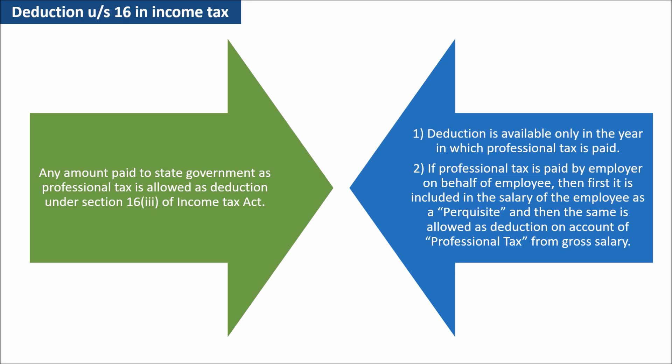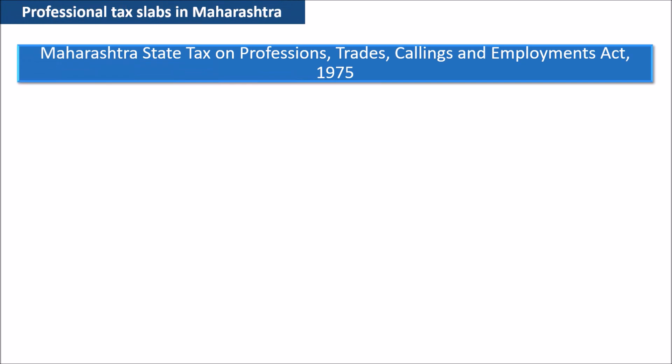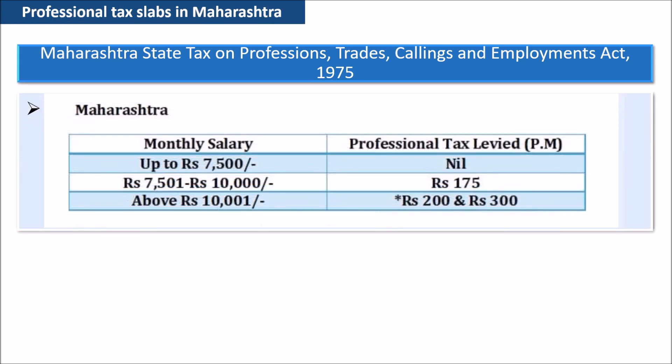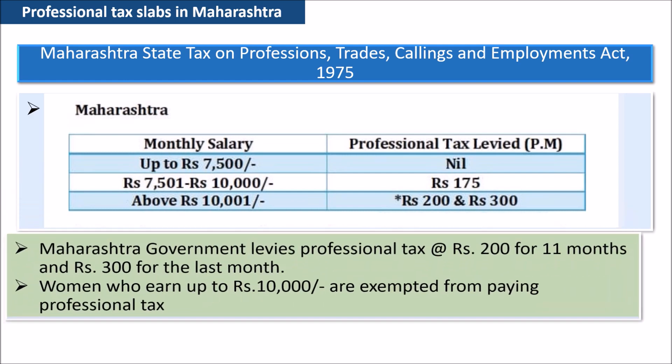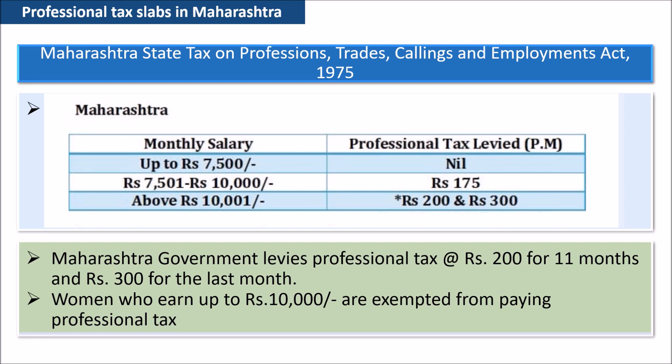Let's see professional tax slabs in Maharashtra. Up to 7500 rupees, there is no professional tax liability. For employees earning 7501 rupees to 10,000 rupees, professional tax liability is 175 rupees. For employees earning above 10,000 rupees, professional tax liability is 200 rupees or 300 rupees per month. Maharashtra government levies professional tax at 200 rupees for 11 months and 300 rupees for the last month. Women who earn up to 10,000 rupees are exempted from paying professional tax.